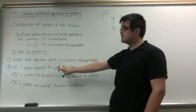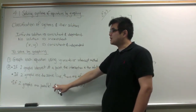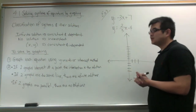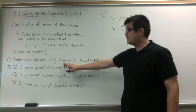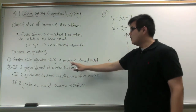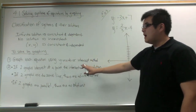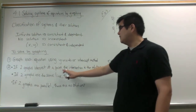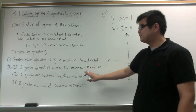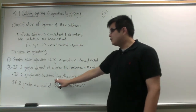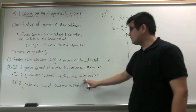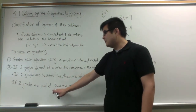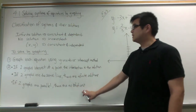These are the steps for how to solve by graphing. The first step is to graph each equation using the slope-intercept form to graph, or the intercept method. Then, if your two graphs intersect at a point, the intersection is a solution. If the two graphs are the same line, there are infinite solutions. And if the two graphs are parallel, there are no solutions.